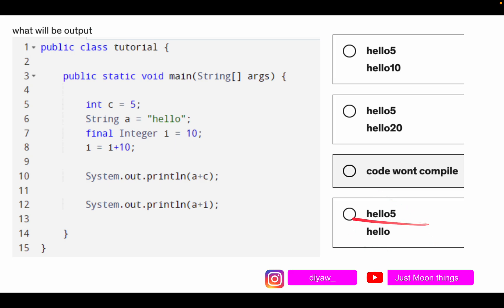Then we have hello5 and hello. This is absolutely incorrect because i holds some value. So the correct answer over here is code won't compile. Why, why is the question?